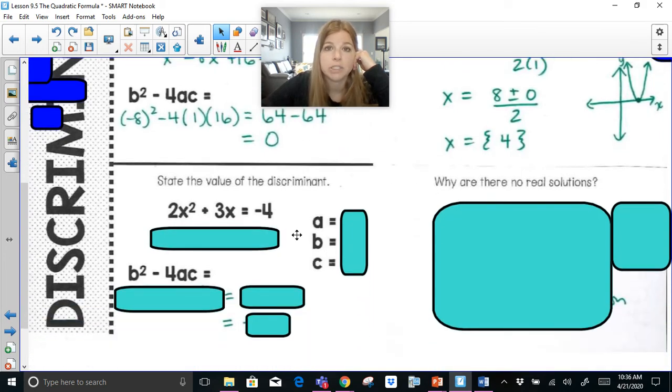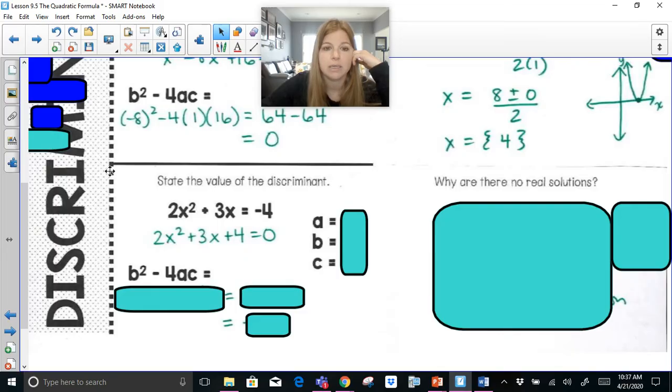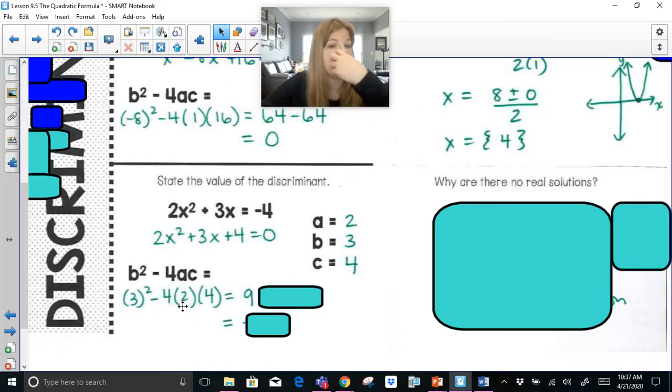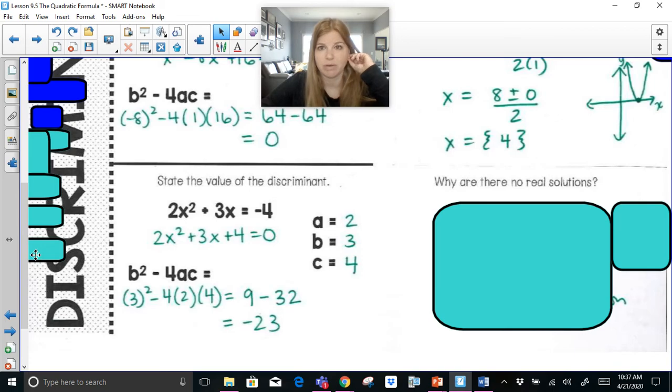This last one is where our discriminant is negative. First, we set this equation equal to 0 by adding 4 on both sides. We then see our a is 2, b is 3, c is 4. So b squared minus 4ac: 3 squared minus 4 times 2 times 4. 3 squared is 9, negative 4 times 2 is negative 8, negative 8 times 4 is negative 32. 9 minus 32 is negative 23.